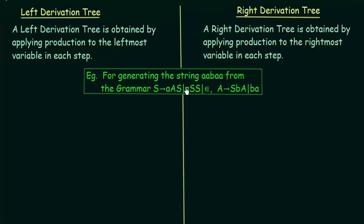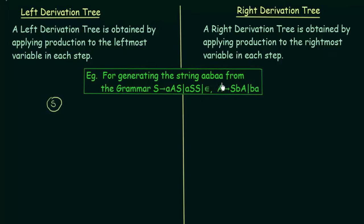Here we have an example: for generating the string A, A, B, A, A from the grammar — S gives A, A, S and also A, S, S and also epsilon; A gives S, B, A and also B, A. We want to generate the string AABAA from this grammar. First, let us make the left derivation tree. We start with the start symbol S as the root vertex. S can give A, A, S or A, S, S or epsilon. To get A in the next step and then B after that, I will choose the production A, S, S.